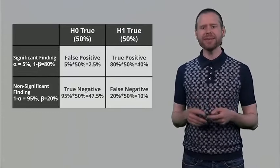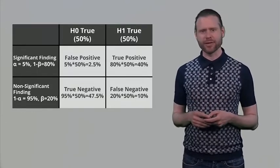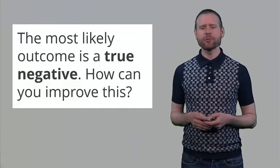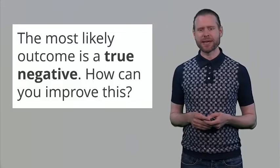Now this might be surprising: if you do a new study and you don't know whether the null or the alternative is true, and you use the recommended alpha level and the recommended statistical power, then the most likely outcome of your next study is a true negative. Nothing is going on, and you correctly conclude that nothing is going on. So you might be surprised that the most likely outcome is a true negative, when very often you are interested in finding a significant effect and finding support for the alternative hypothesis. So how can you improve these probabilities?